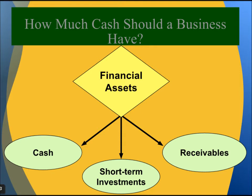How much cash should a business have? What kind of assets should a business have? Businesses have cash — cash is king. Then there are short-term investments, and then there are receivables. All these three are different kinds of financial assets which a business uses.